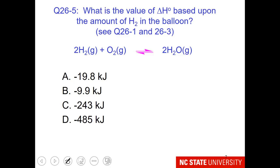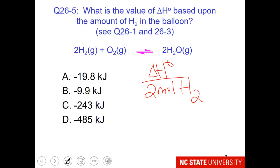Now I'd like you to determine ΔH° based on the amount of hydrogen in the balloon. Earlier you had a question where you figured out how many moles of hydrogen there are. You also figured out ΔH° for the reaction as written, which has 2 moles of hydrogen.